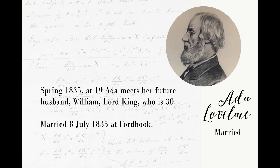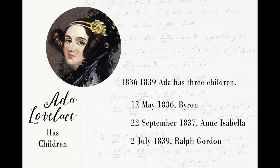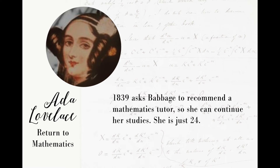In the spring of 1835, Ada met her future husband William, Lord King, who was 30 at the time, and they were married just a few months later in July of 1835. From 1836 to 1839, she had three children: Byron in May of 1836, Anna Isabella in September of 1837, and Ralph Gordon in July of 1839. Even though she had just had a baby four months previous, later in 1839 she asked Babbage to recommend a math tutor so she could continue her studies. She was just 24 and busy managing the household, but she wanted to continue her studies.